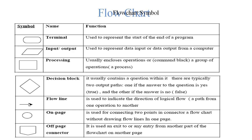The flow line is used to indicate the direction of logical flow — the path from one operation to another. A connector is used to connect two points in the flowchart without drawing flow lines across a page. It can also be used to exit or enter another part of the flowchart on another page, which is the off-page connector.